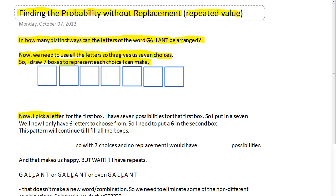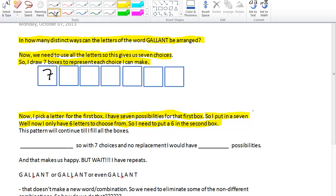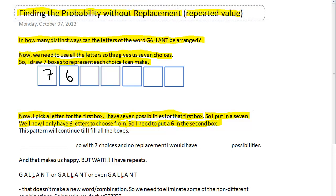So, now I pick a letter for the first box. I have seven possibilities for that first box. So basically, all I have to do is put a seven, so that's what I'm going to do now. So a seven goes right here. For my first choice, I can pick any of these seven letters right here. But as soon as I do that, well, now I only have six letters to choose from.